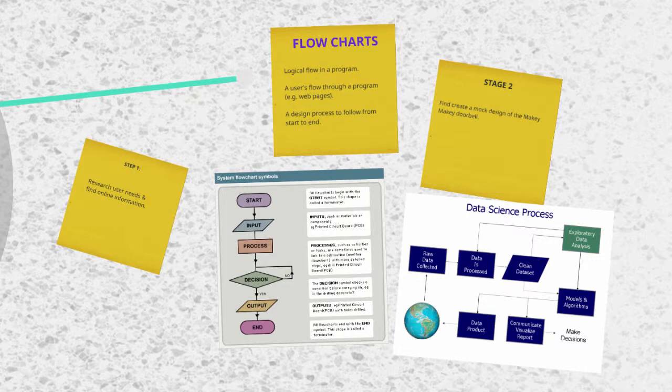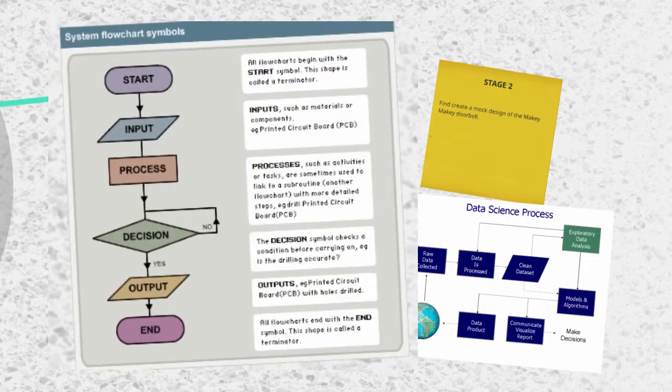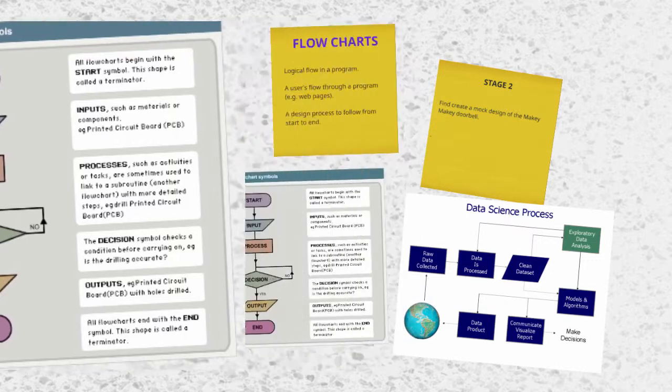If you haven't done so already, you might start to introduce students to flowchart conventions and symbols that computer scientists use. For example, here on the left we have an image that shows the representation of different symbols and what they mean in a flowchart. These conventions are really useful as they provide computer scientists with a clear indication of what is happening in the flowchart.